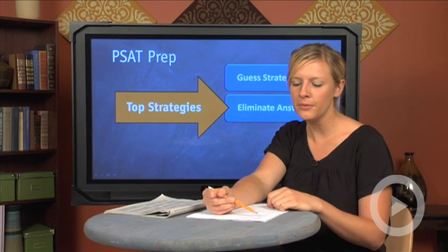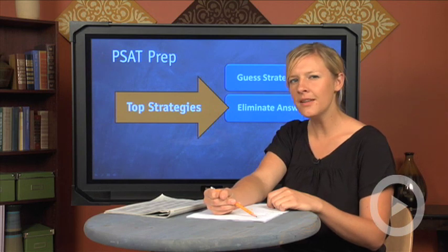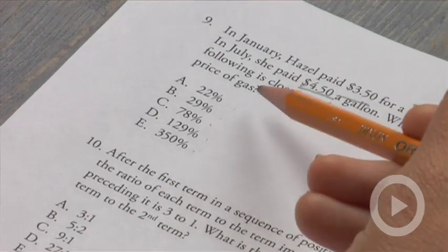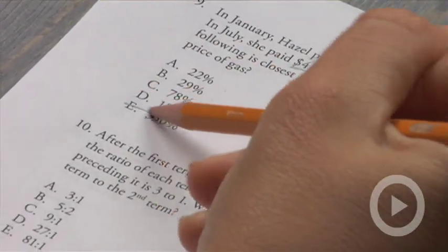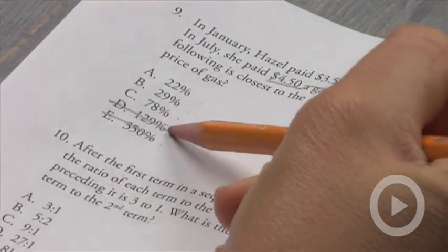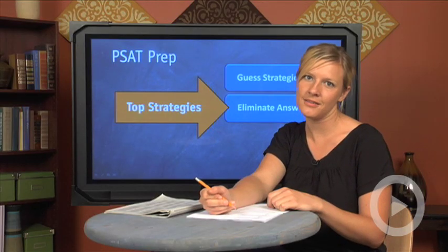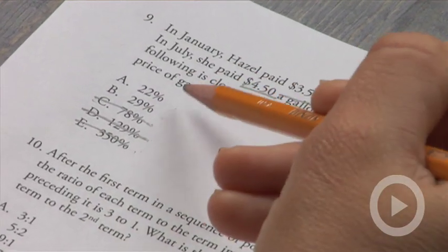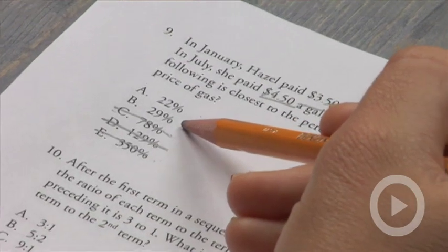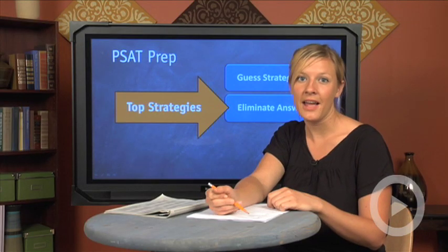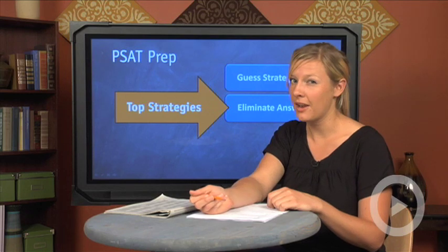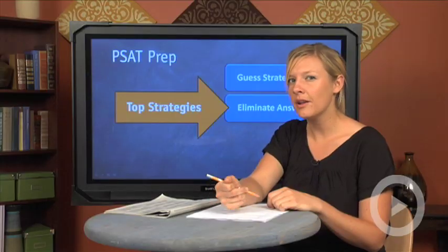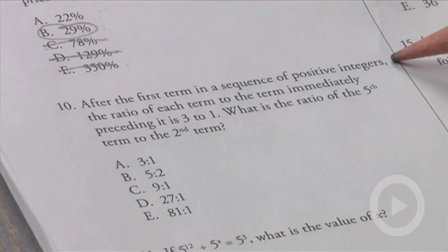That's a pretty big range. There are three answer choices that are pretty close together — 22%, 29%, and 78% — while 129% and 350% are much further out. I would probably eliminate 350% and 129% since they just don't make sense. If I eliminate further, I'd get rid of 78% too, since 22 and 29 seem close together. Eliminating three answer choices gives me a 50/50 chance, so I'll go with answer B — and it turns out to be correct.